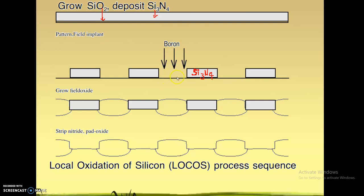When you increase the threshold voltage of the parasitic MOSFET, it becomes difficult to turn it on. If it is difficult to turn on the parasitic MOSFET, it is as good as turned off — as good as not present at all. So that helps us in the isolation. We have the active area, the isolation region, and we have already implanted it with boron.